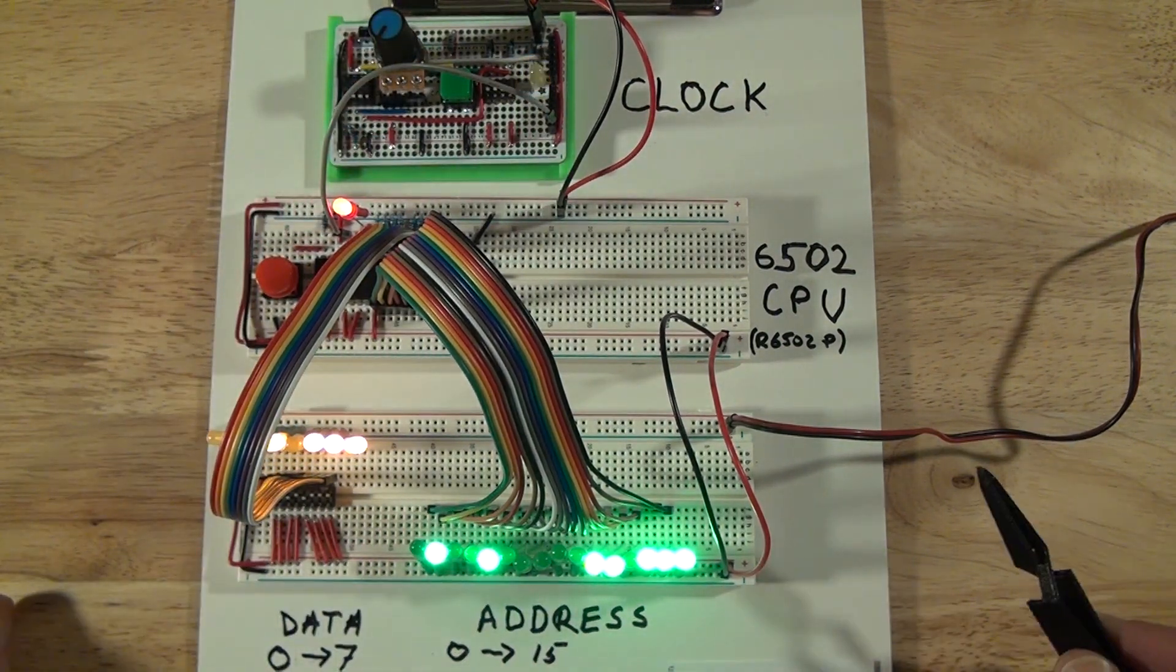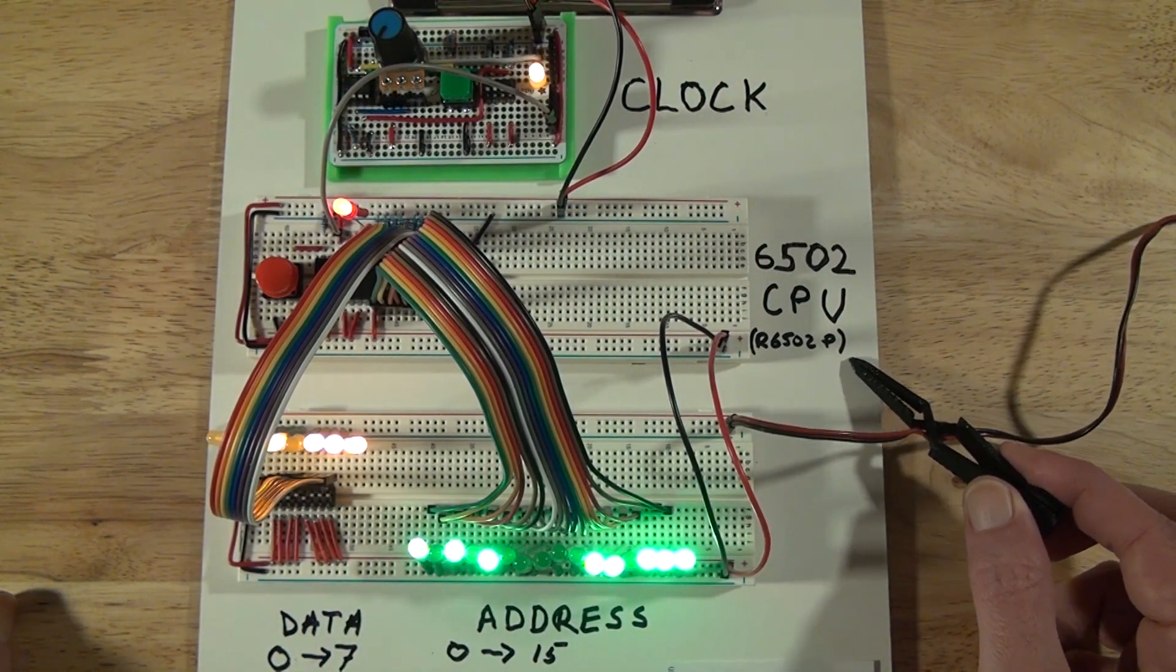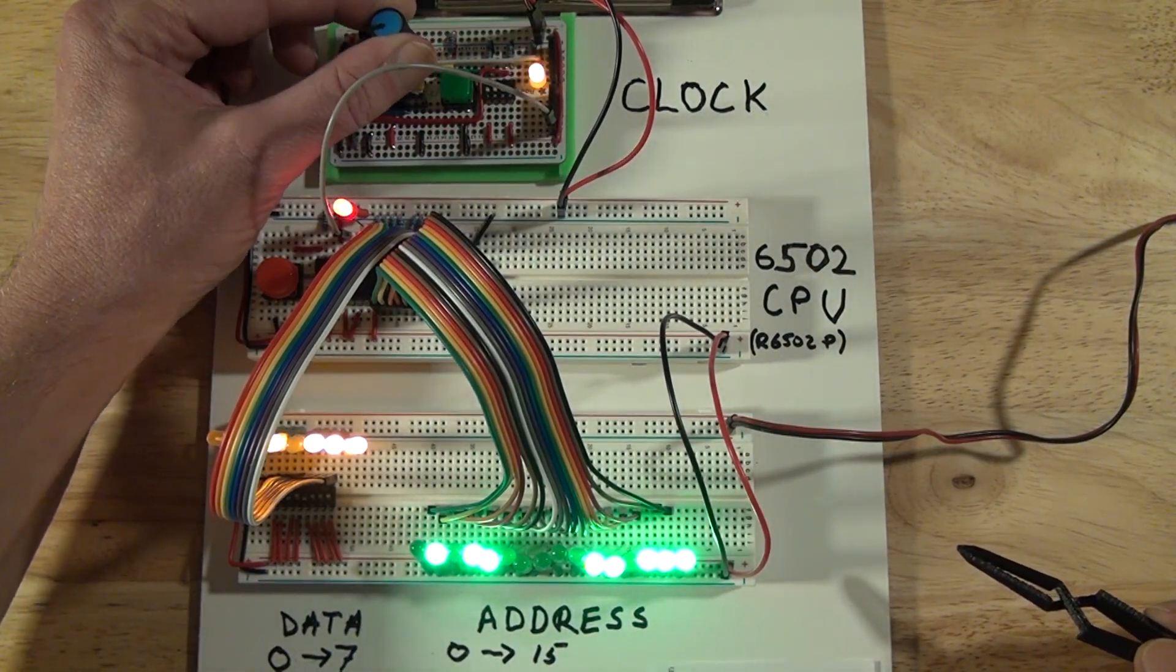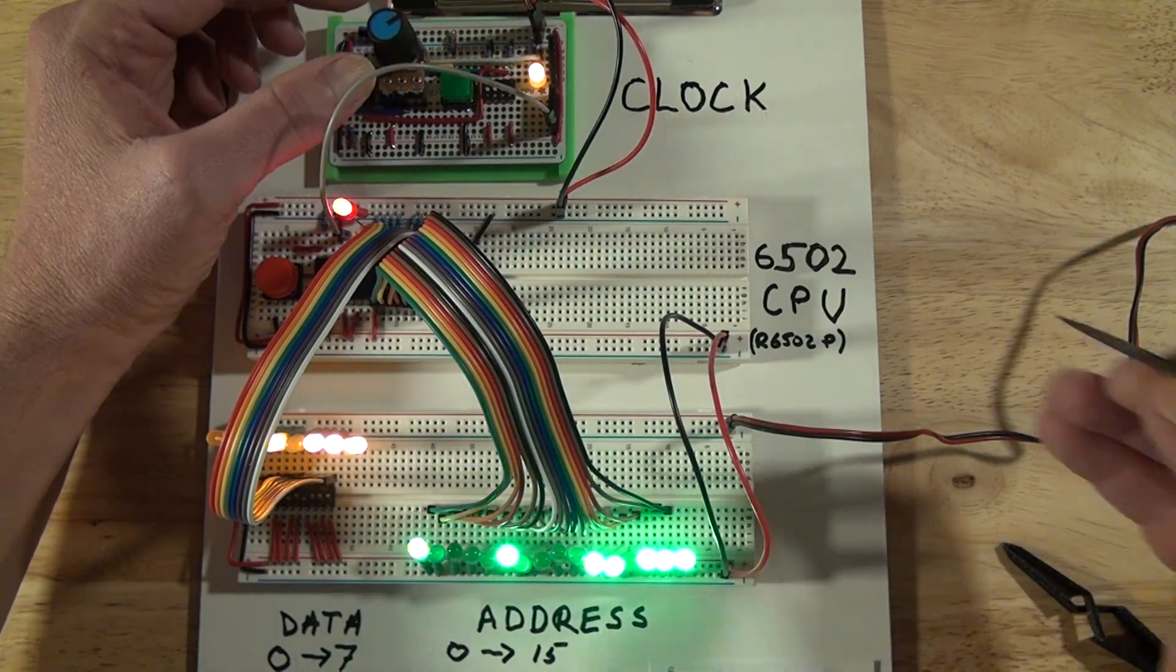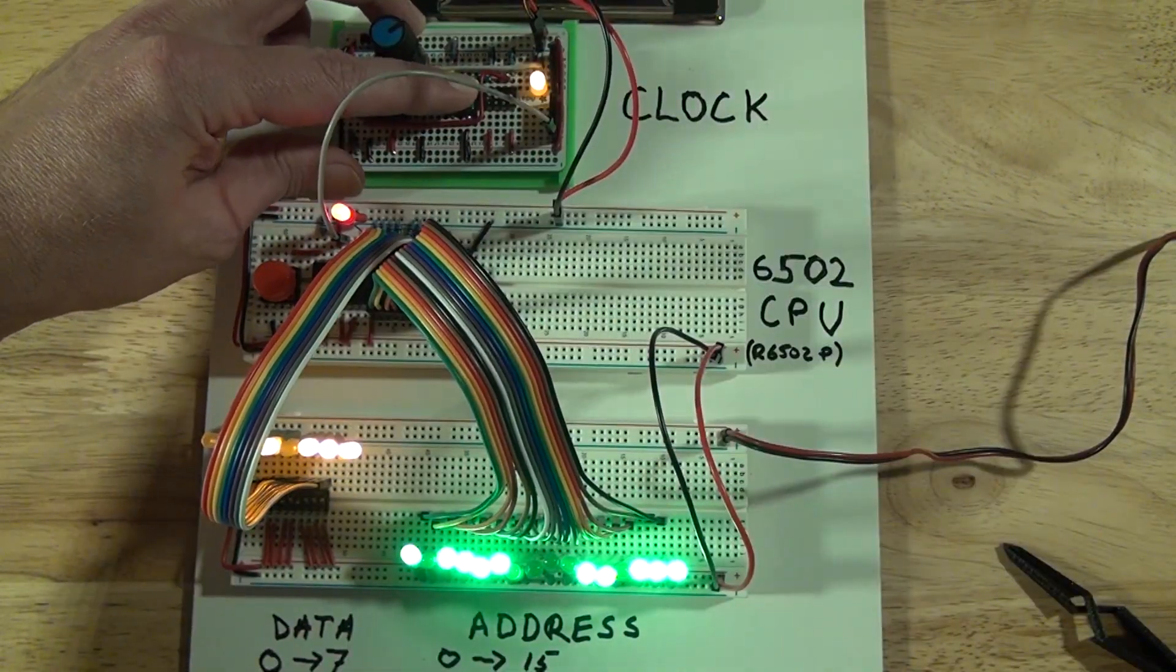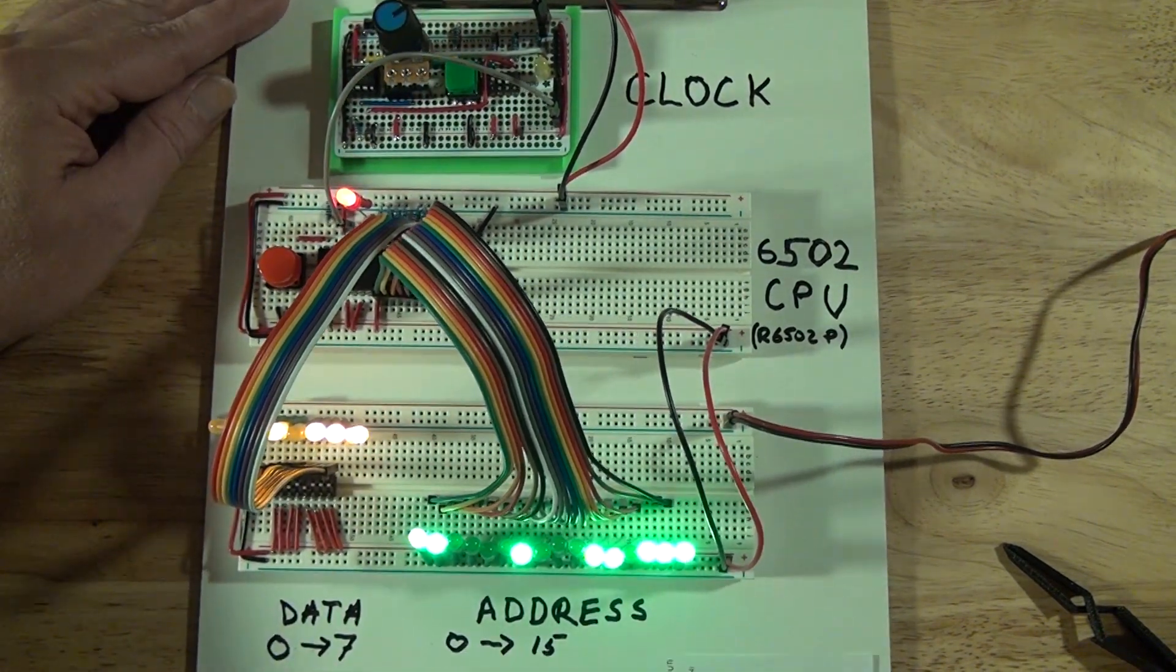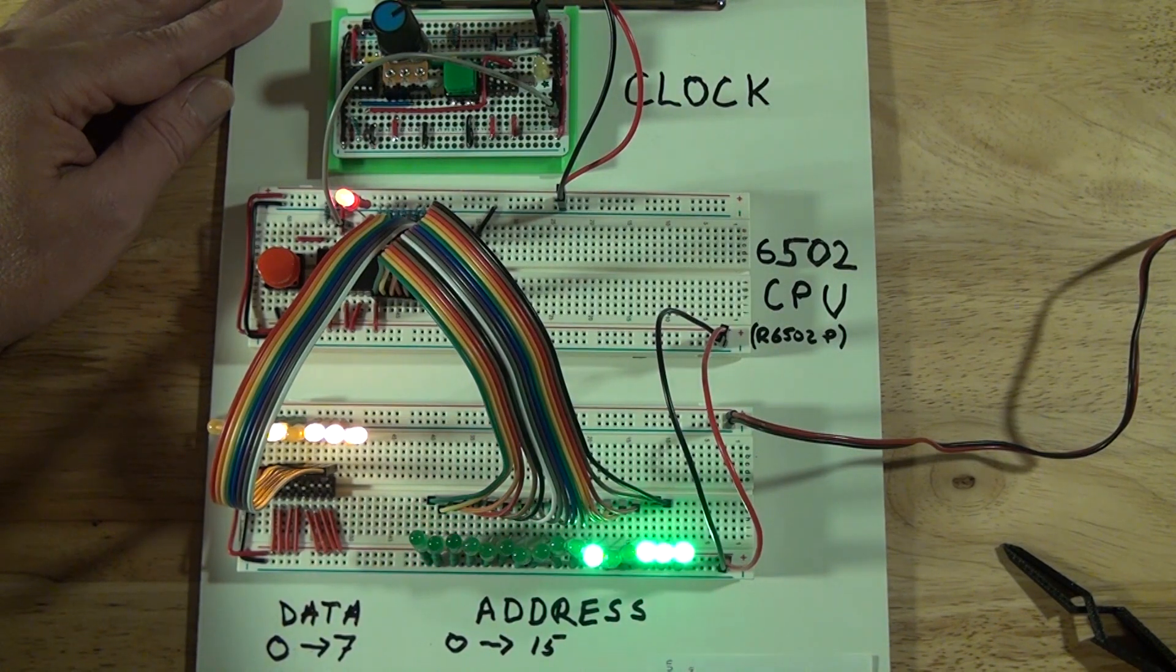One interesting thing about this processor that I have is, as you can see here, it is actually a Rockwell 6502. And it's not the more modern static version of the 6502. So there is a sort of minimum clock speed. And if you slow the clock down, if you try to single step the clock, it works as long as you keep going. But if you stop for too long, what will happen is the processor kind of winks out.